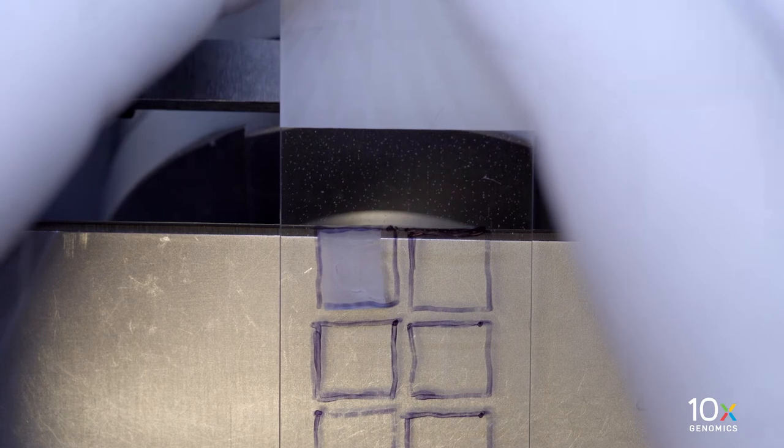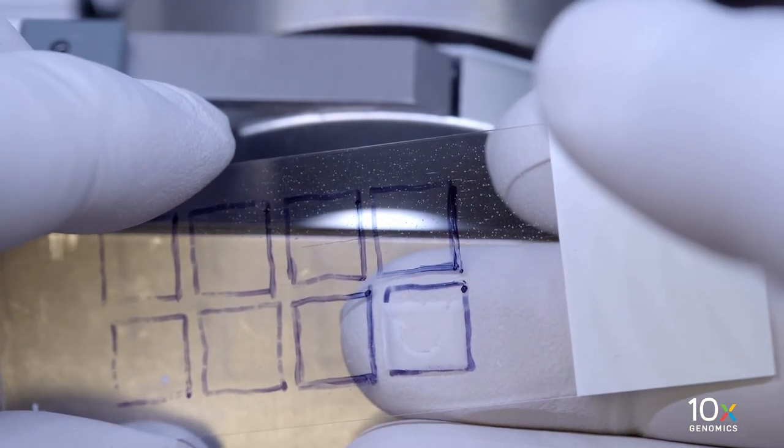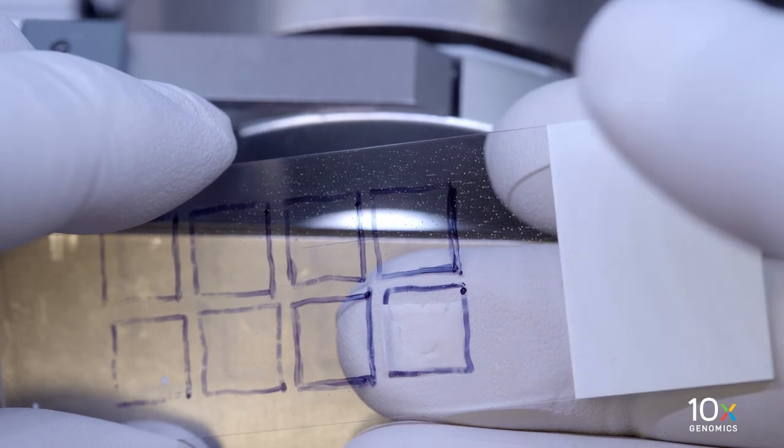Place the section in the trace box by gently touching the section with the slide surface. Immediately place the finger on the back side of the plain glass slide for a few seconds to allow the section to adhere to the slide.